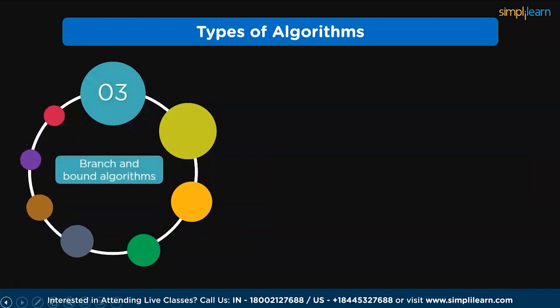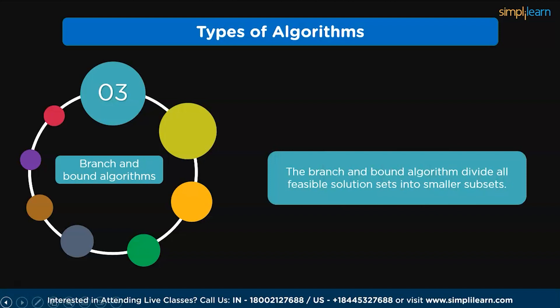Next, we have branch and bond algorithm. The branch and bond algorithm divides all feasible solution sets into smaller subsets. They are then evaluated further to determine the solution. It is used to solve problems involving integer programming.